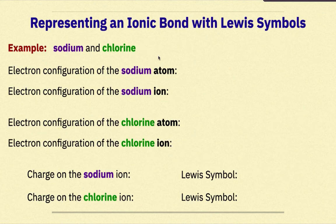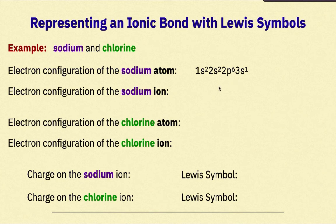Representing an ionic bond with Lewis symbols: sodium and chlorine. The electron configuration of the sodium atom is 1s2, 2s2, 2p6, 3s1. The electron configuration of the sodium ion is 1s2, 2s2, 2p6. Notice the difference between the atom and the ion is the removal of the 3s1 valence electron.